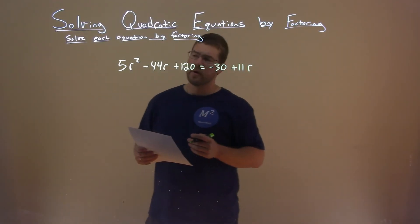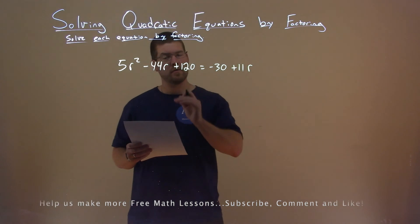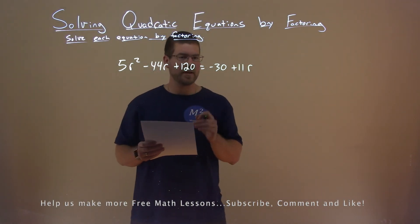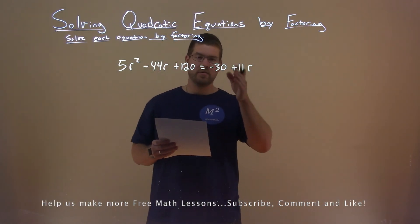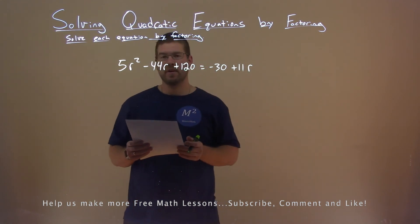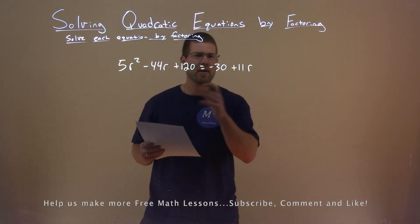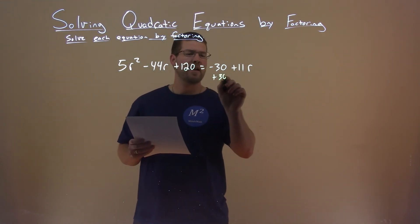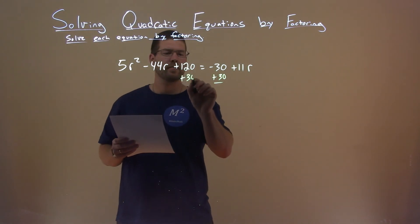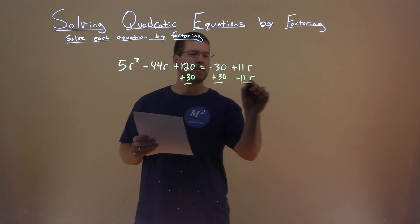We're given this problem right here: 5r squared minus 44r plus 120 equals negative 30 plus 11r, and we need to solve this by factoring. Let's get our like terms together. Let's add 30 to both sides and subtract 11r from both sides.